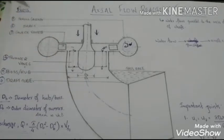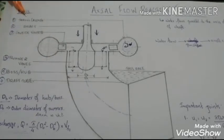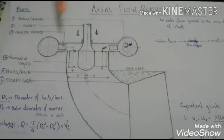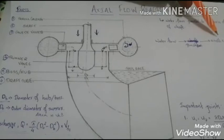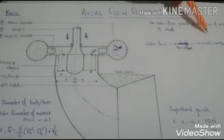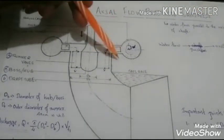Another major part of the axial flow reaction turbine is scroll casing. These are the scroll casing. Here comes the scroll casing. Water flowing from the pen stock is moved to the scroll casing and is circulated inside it.